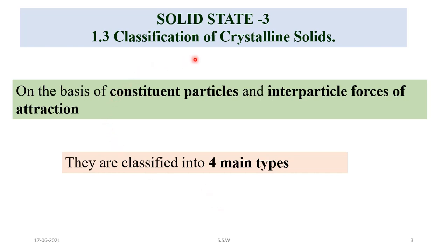These crystalline solids are classified on the basis of two points: constituent particles and inter-particle forces of attraction, that is the force of attraction between atoms, ions, or molecules. On this basis, crystalline solids are classified into four main types.